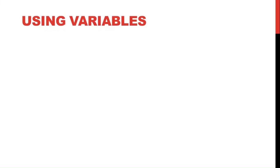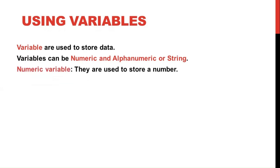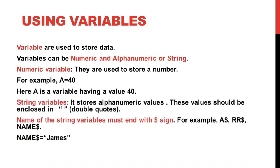Now we will learn how to use variables. Variables are used to store data — they are user-defined names which can store some data. Variables can be numeric or alphanumeric (string) variables. Numeric variables store numbers; for example, if I write a = 40, then a is a variable with value 40. String variables store alphanumeric (text) values containing alphabets and numbers. Values for string variables should be enclosed in double quotes, and the name of a string variable must end with a dollar sign.